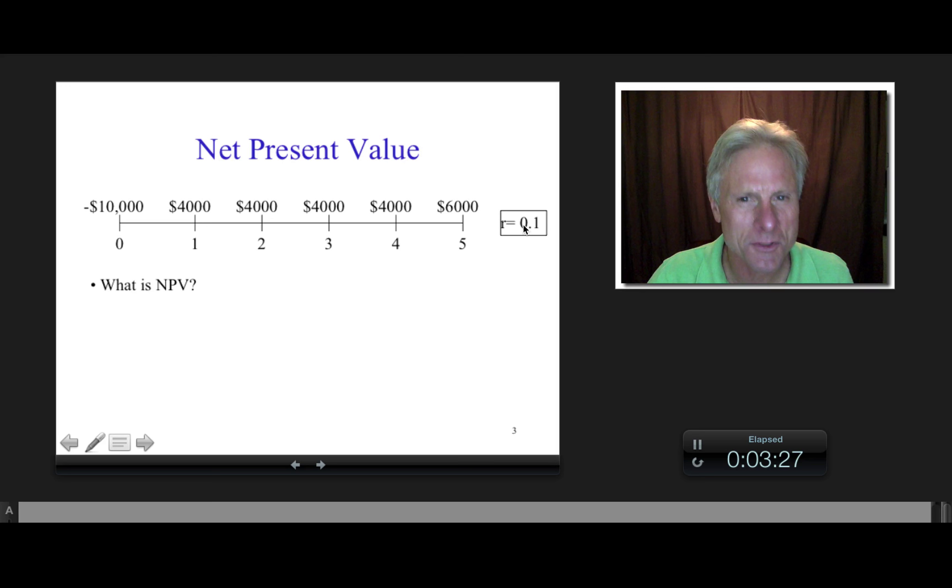And so what do you think net present value is? Well from time value of money, you know what present value is, right? Present value is just bringing cash flows back to an earlier time period. So net present value, and I assume they call it net present value because they're basically going to take all of these future expected cash flows and they're going to net it with this initial time zero cash flow and that's what they're going to call the net present value.